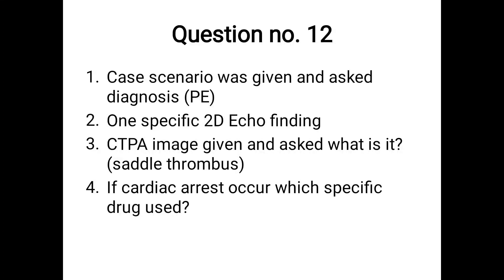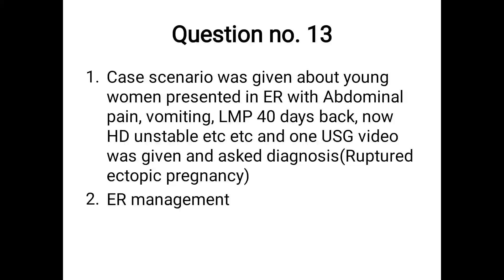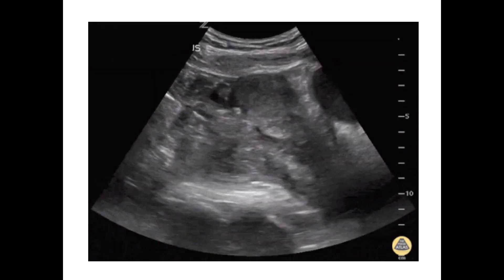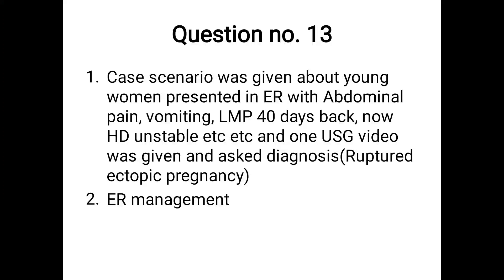Question 13: a young woman presenting to ER with abdominal pain, vomiting, LMP 40 days back, hemodynamically stable — a UVS video was given. Diagnosis: ruptured ectopic pregnancy. ER management using ABCDE approach: secure airway, oxygen and ventilate; insert two large-bore IV cannulas, collect blood sample for pre-op and blood grouping and cross-matching, start IV fluid resuscitation, start blood products if available, and shift the patient to OT for definitive management.